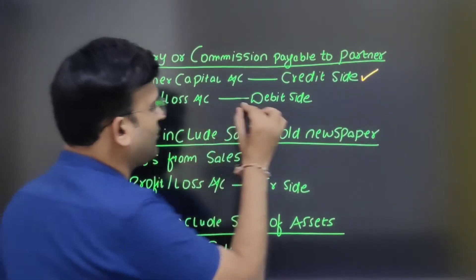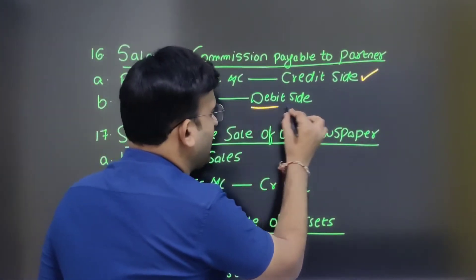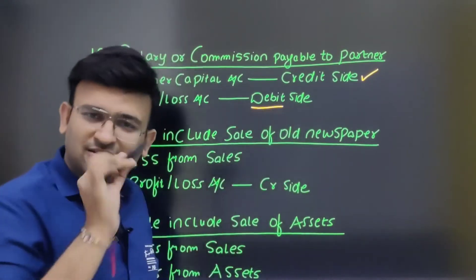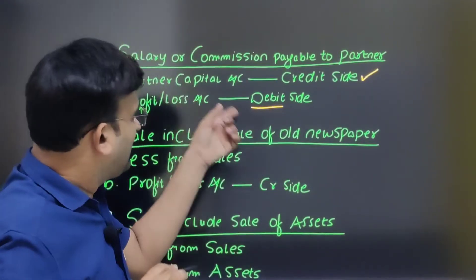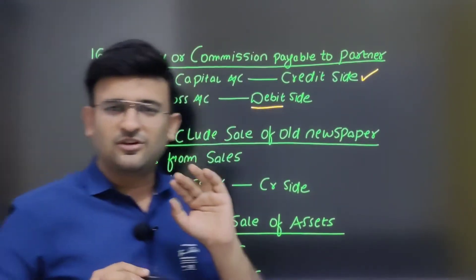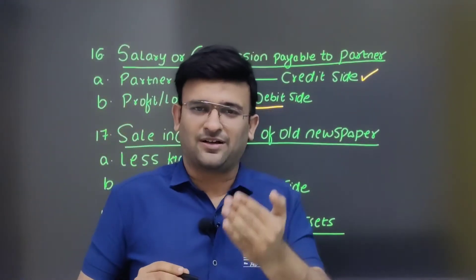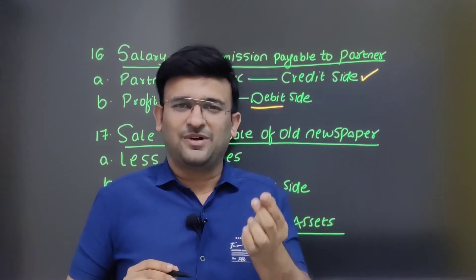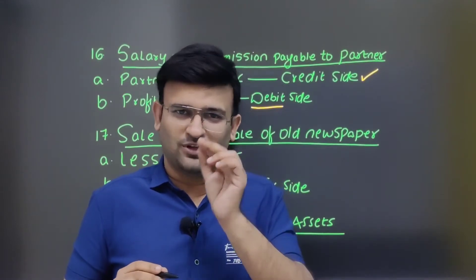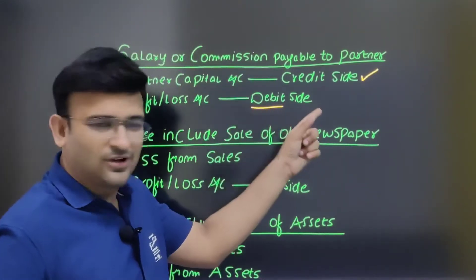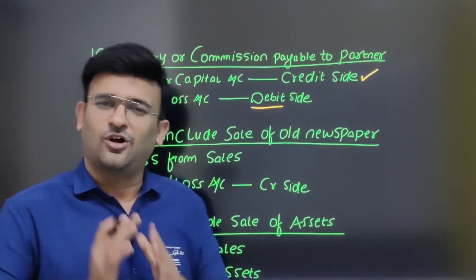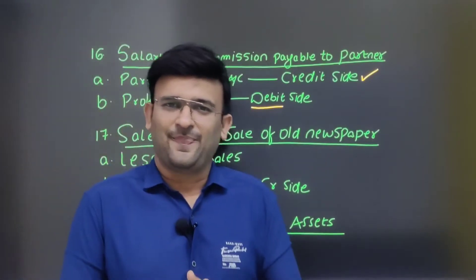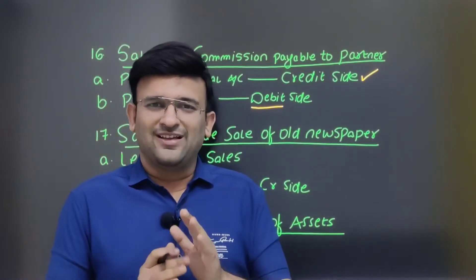Salary or commission payable to partner: partner's capital account — credit side. Profit and loss account — debit side. This is the double entry for salary or commission payable to partner.